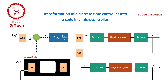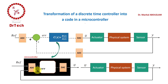The question is: how to apply the transfer function in our code so that the code can calculate the control input U as a digital signal, which is then converted by the DAC into an analog signal to control the system? We can calculate the error in our code since we have the reference and Y values, where error equals reference minus Y. However, in a microcontroller we generally don't have a library that allows us to use a transfer function directly in our code.